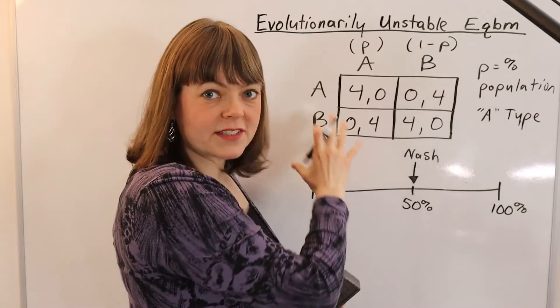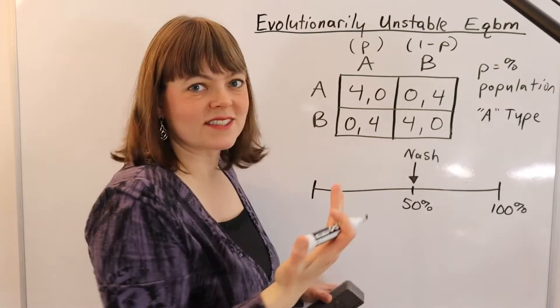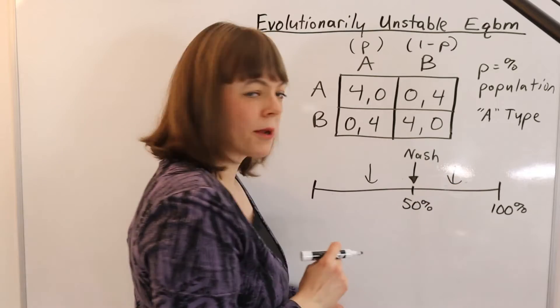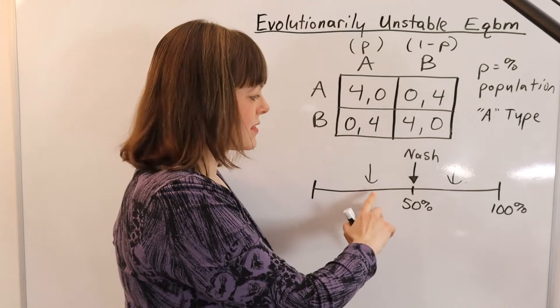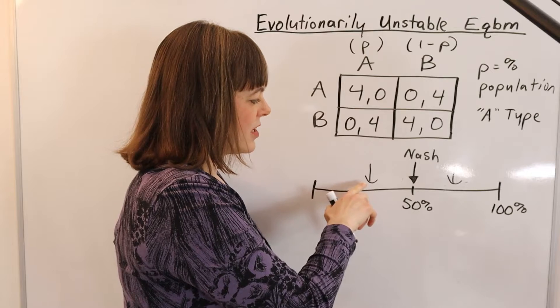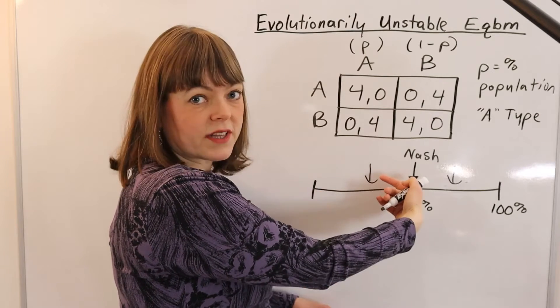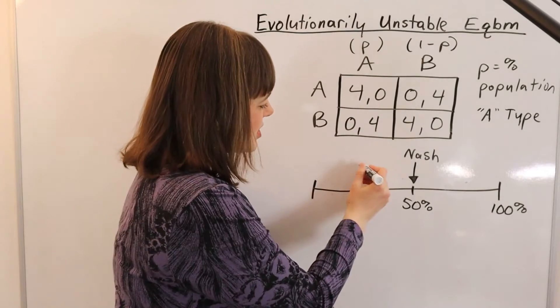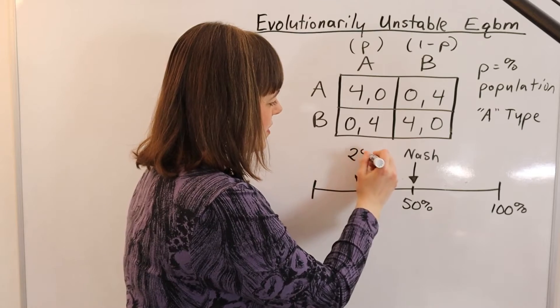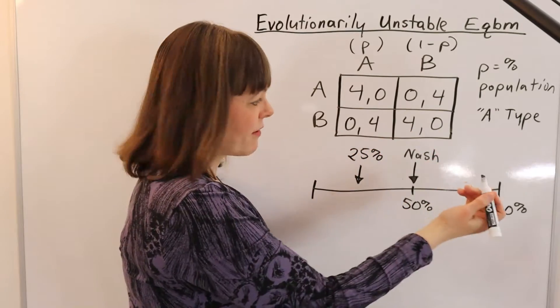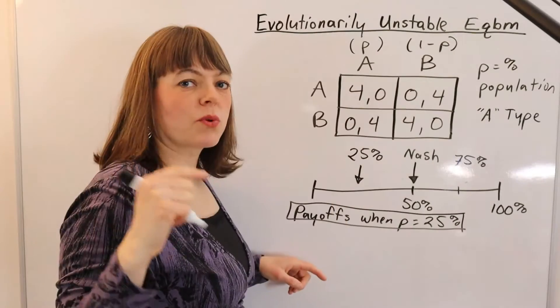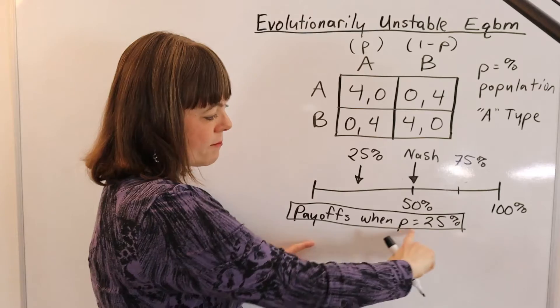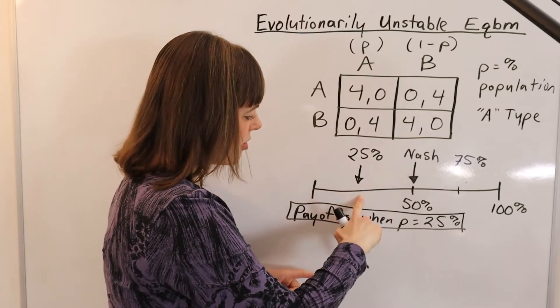How do you figure out whether this particular game is stable or unstable? You basically do it by picking a point on both sides of the equilibrium and saying if you randomly end up at this point, will the population tend toward 50% or toward 0%. I usually pick the easiest numbers to work with, so we're going to do 25% and 75%. We'll start by finding the payoffs to both players, the A types and the B types, when P equals 25%.